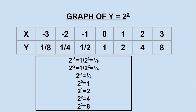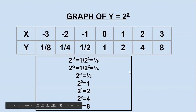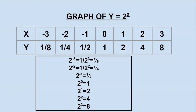When x is equal to minus 3, we get 2 to the power of minus 3, which can be written as 1 by 2 to the power of 3 — using the rule a to the power of minus n equals 1 by a to the power of n. That is equal to 1 by 8. When x is minus 2, we get 2 to the power of minus 2, which equals 1 by 4.